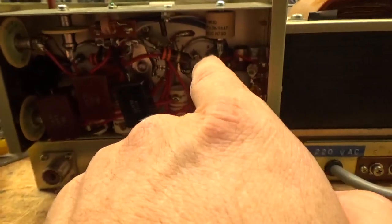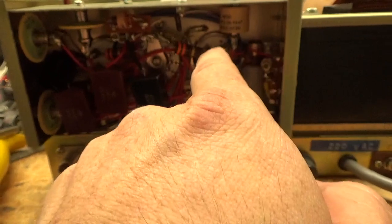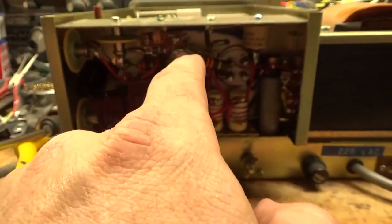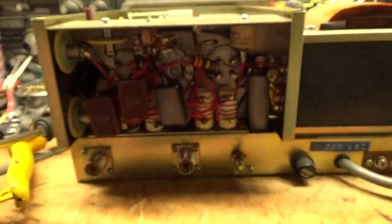Changed the mica cap from grid to ground on each tube socket, and also the grid loading resistors. Brand new Allen Bradley 2W carbon comp.